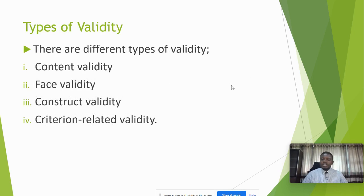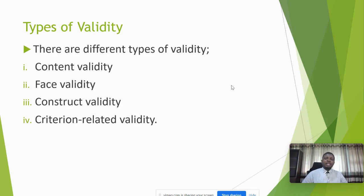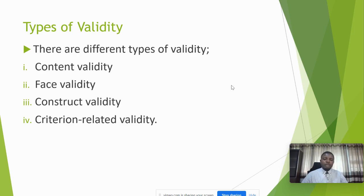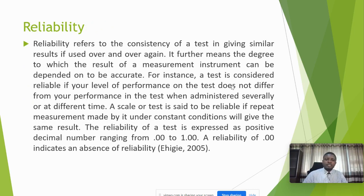Validity has four different types. There is content validity, face validity, construct validity, and criterion-related validity. Content validity also has subtypes — including divergent and convergent validity. Get the textbook and read more about the types of validity so you can grab more information.